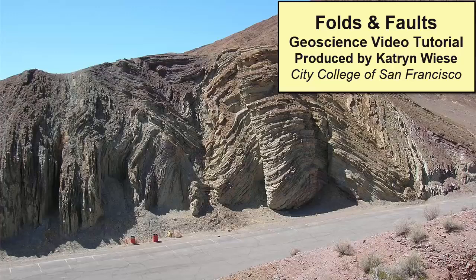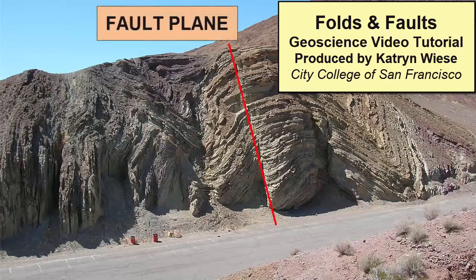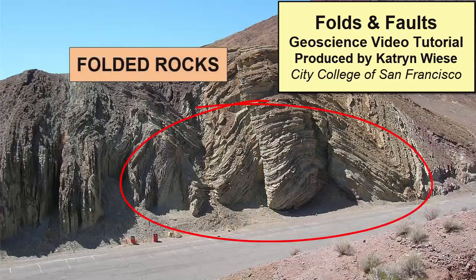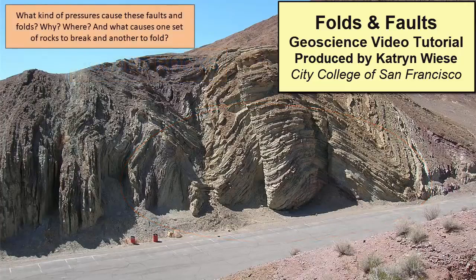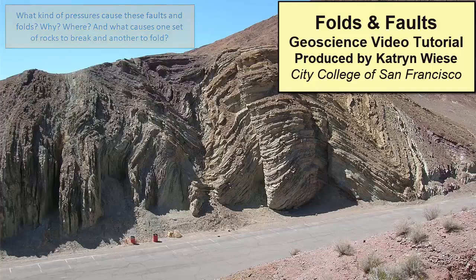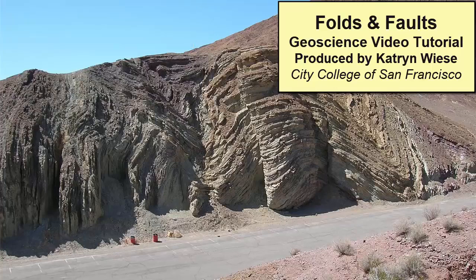When we observe rocks around the Earth, we can often see surfaces along which rocks have broken and moved — surfaces we call fault planes. Or we can see layers of rock that have folded. What kind of pressures cause these faults and folds? Where? And what causes one set of rocks to break and another to fold? In this video tutorial, we will explore the causes and consequences of pressure applied to rocks, a term known as stress.